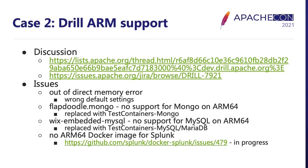The last issue was with the Splunk storage module. Drill was already using Testcontainers Splunk, but there is no ARM64 Docker image for Splunk in their Docker Hub repository. I created a ticket at the Splunk Docker Hub repository and disabled the integration test for the Splunk storage module in Drill until an ARM64 Docker image is provided. With this, all issues of Apache Drill on Linux ARM64 were fixed.